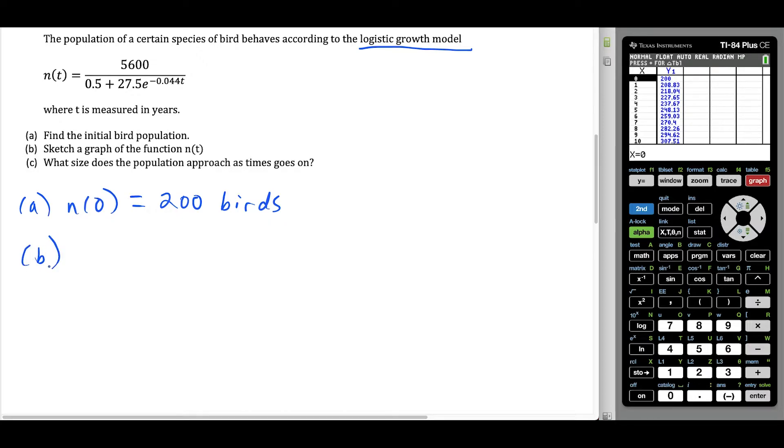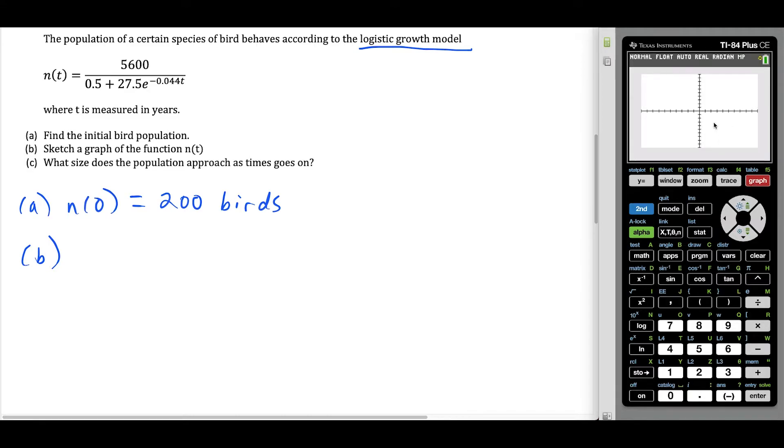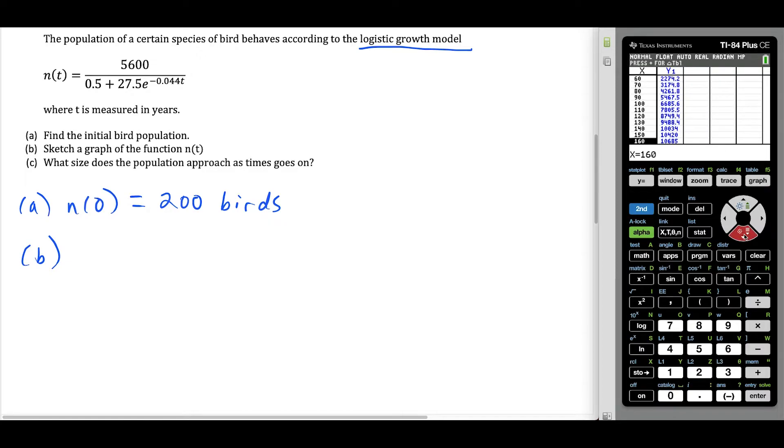Now for part B, we want to sketch a graph of the function n(T). Notice if I press graph, the graph doesn't show us anything. That's because if we look at the table, notice the Y values immediately start at 200, and our maximum Y value right now is at 10. The standard mode here goes negative 10 to 10 for the X and the Y. So what I like to do for questions like this is you could switch the table to count by something like 10s. And you just keep scrolling until you see the table eventually start to cap off. This is going to take a little bit. Notice I have to keep scrolling and eventually the table caps off at 11,200. So that looks like our maximum value.